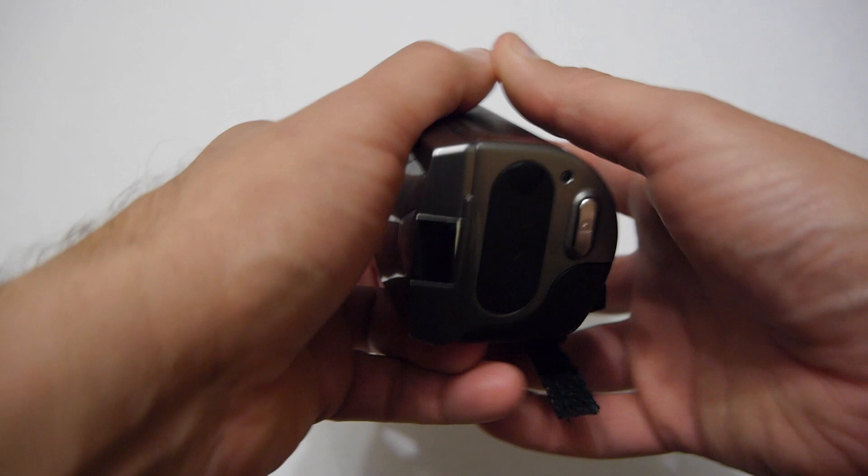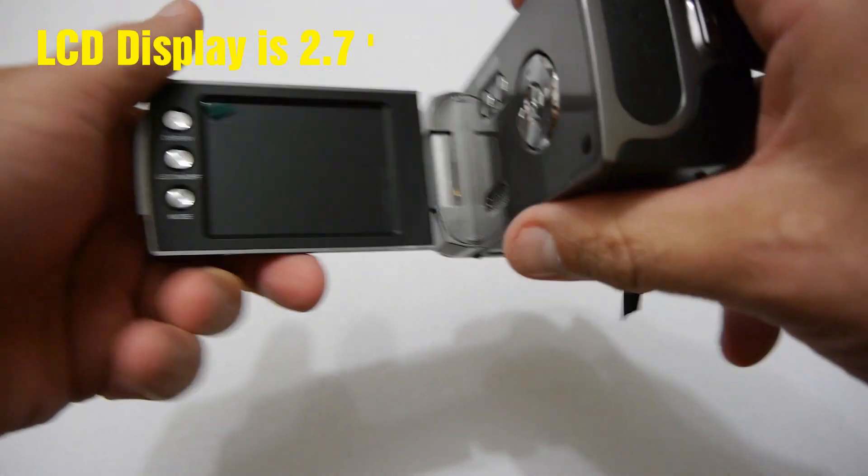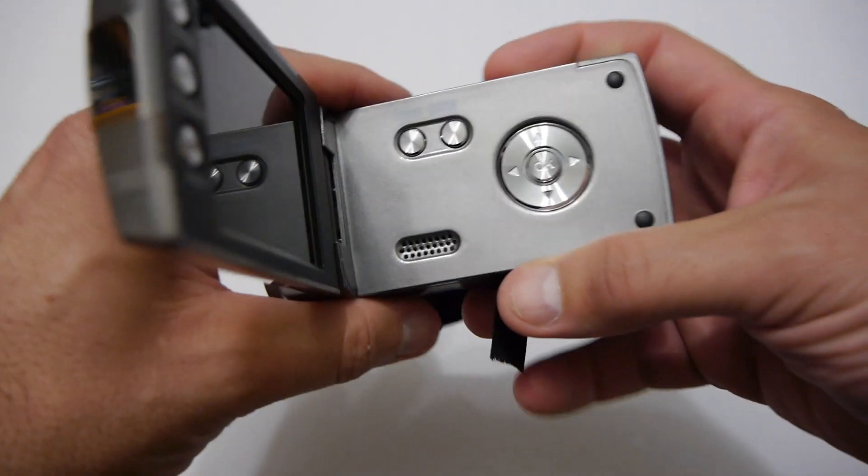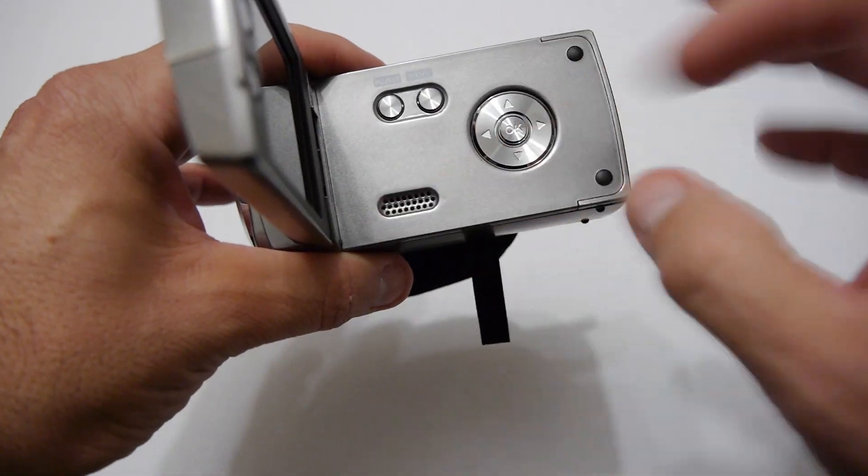Now if you open the screen out you can see you've only got basically a two inch screen. You've got a couple of controls here, a few more controls here and a speaker grill. So that's pretty much everything.